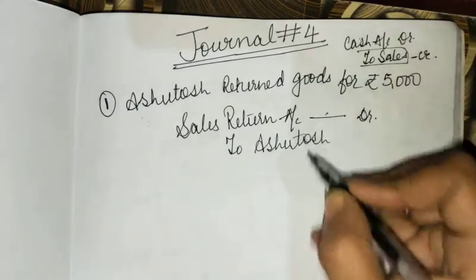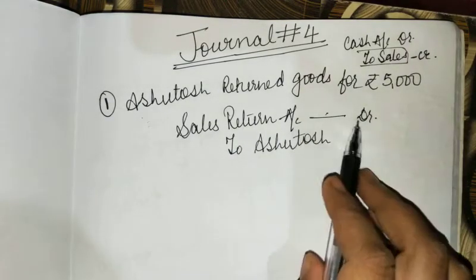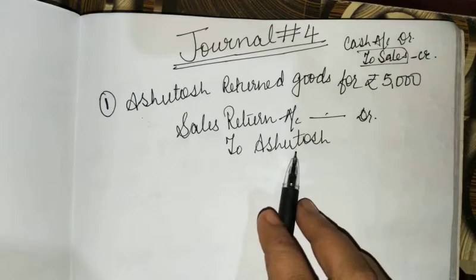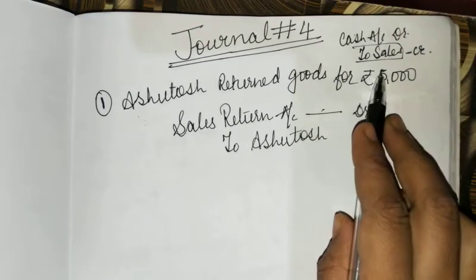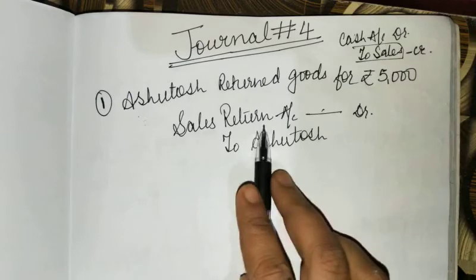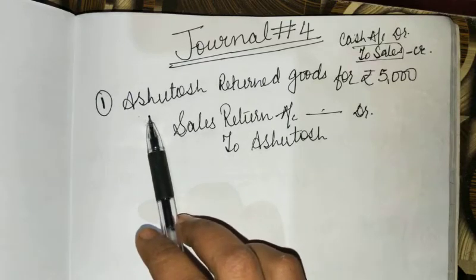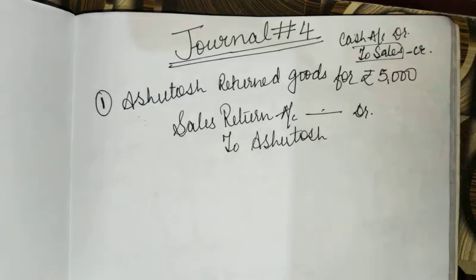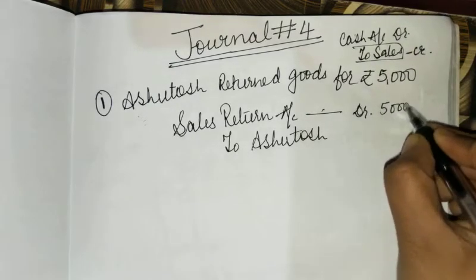Here we have to write: Sales Return Account Dr, debit to Asutos. We have to write this — Sales Return opposite to Asutos — and here we write the imaginary amount.